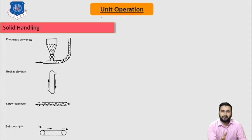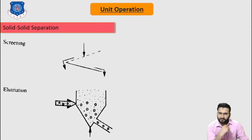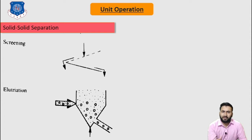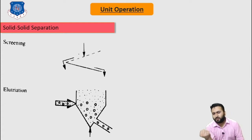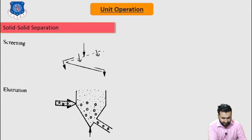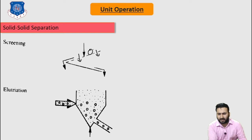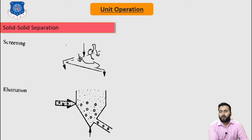Now let's discuss solid-solid separation. Solid-solid separation can be done by screening. In screening, wire, plastic, or fabric screens are normally used to separate solids of various particle sizes. Particles flow down through the screen and are collected. Larger particles are rejected by the screen while smaller particles pass through and are easily collected.